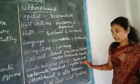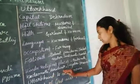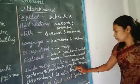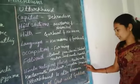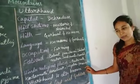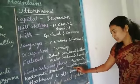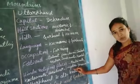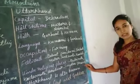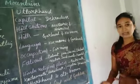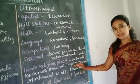Important Hindu religious places in Uttarakhand include Badrinath, Kedarnath, Haridwar, Gangotri, and Yamunotri. The Ganga River originates at Gangotri, and the Yamuna River originates at Yamunotri.